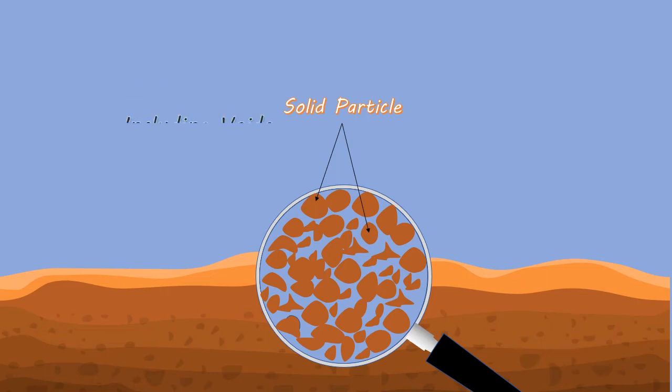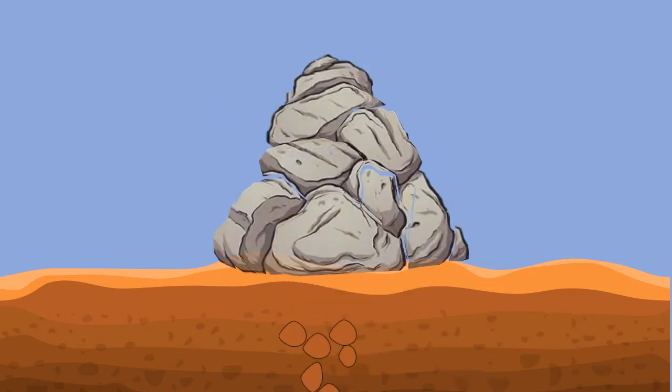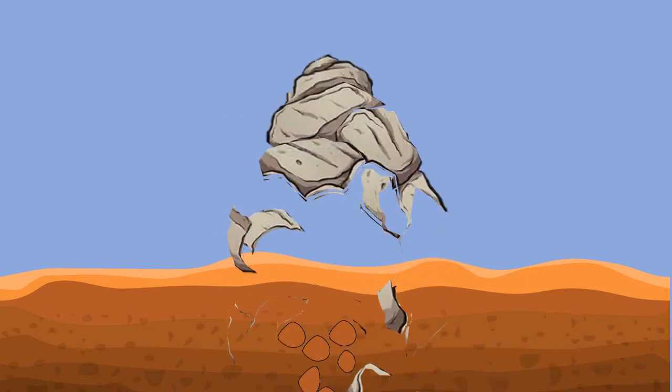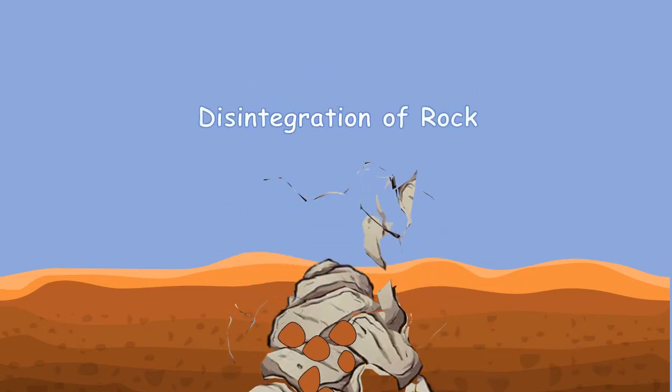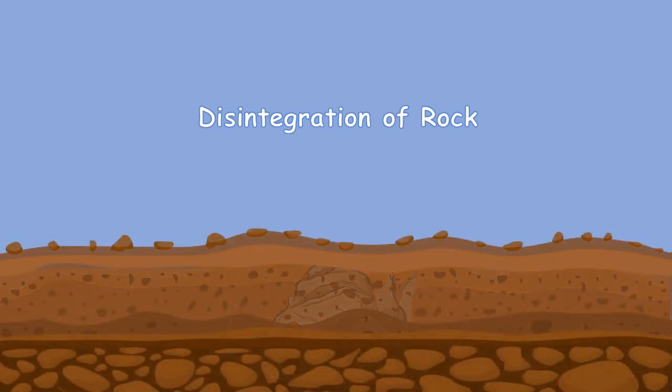Here, unconsolidated means solid particles including voids in between them. These solid particles are produced by slow disintegration of rocks. With time, rocks transform into solid particles.